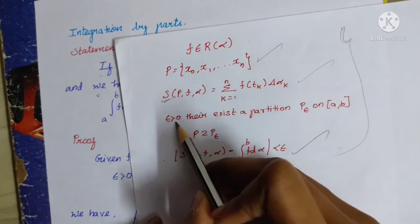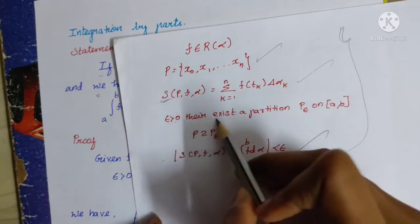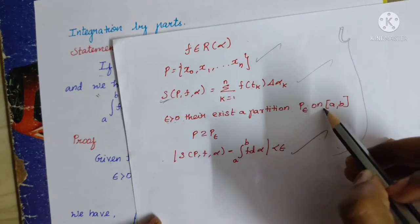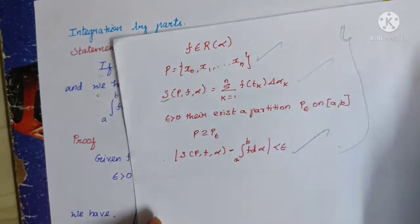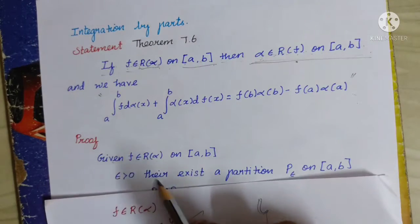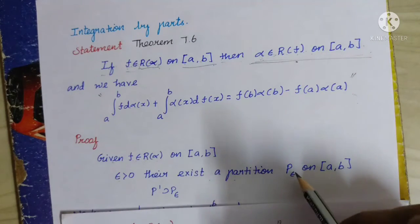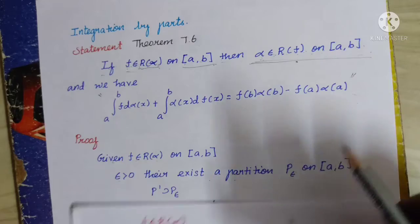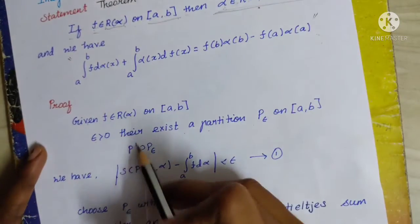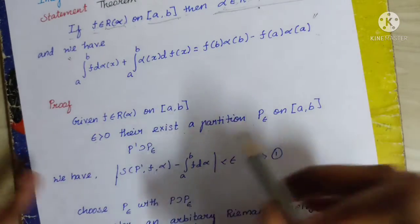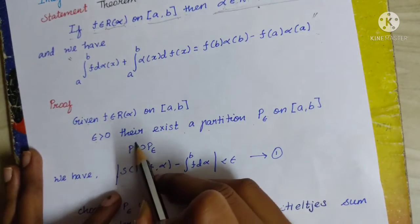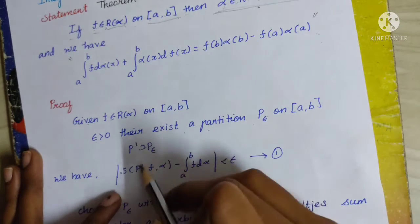If epsilon is greater than 0, there exists a partition P_epsilon on closed interval [a, b] such that any refinement P' containing P_epsilon satisfies our conditions. Let's see how this works.